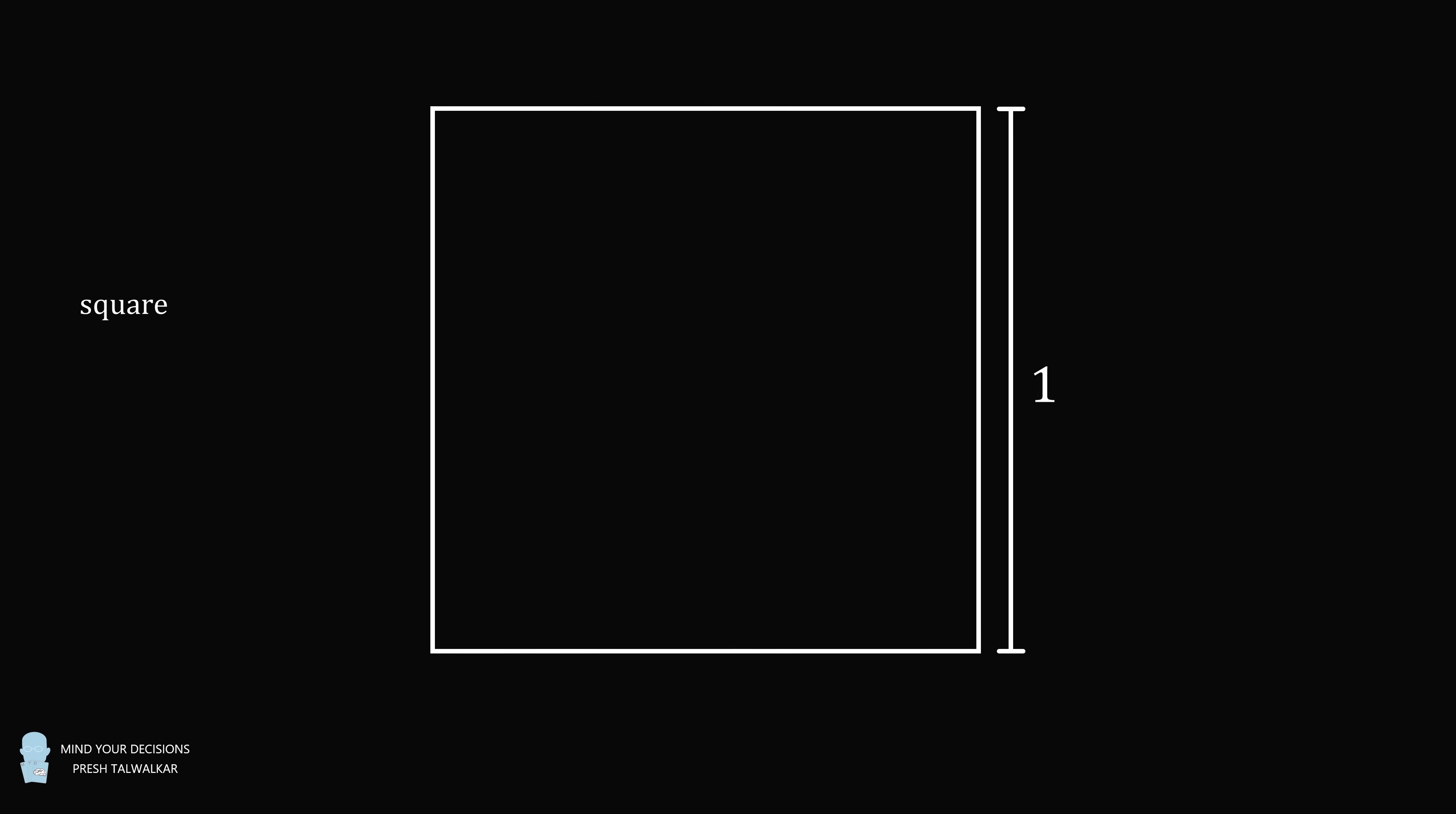Hey, this is Presh Talwalkar. Start with a square whose side length is equal to one unit. Construct four congruent right triangles as shown, where each right triangle's hypotenuse is a side of the square, and the entire large square is divided into these four triangles plus a square in the center.